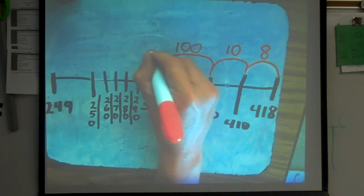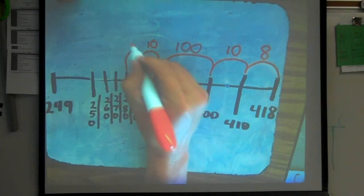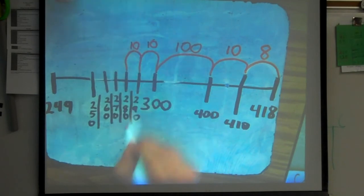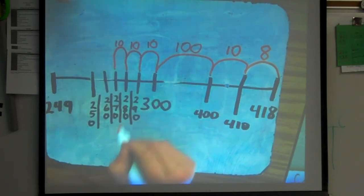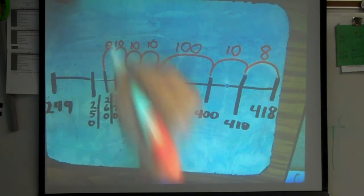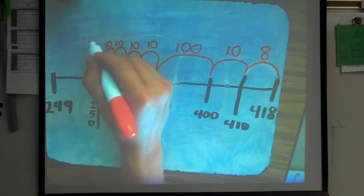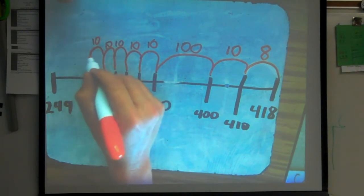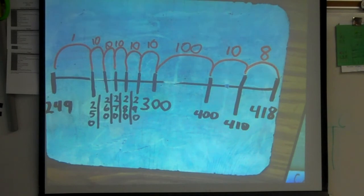So, we're going to go back to our 10s. 300 minus 10 gives us 290. 290 minus 10 gives us 280. 280 minus 10 gives us 270. 270 minus 10 gives us 260. 260 minus 10 gives us 250. We're almost there. 250. We need to take away one more to get to 249.